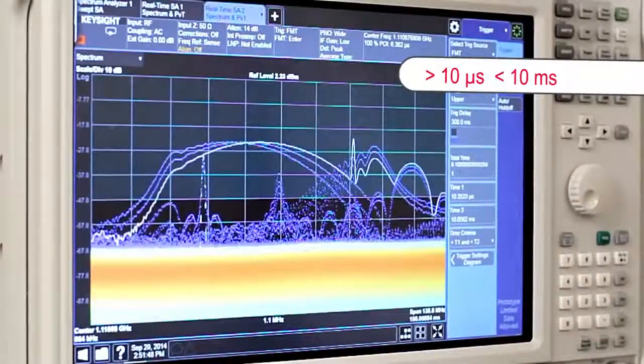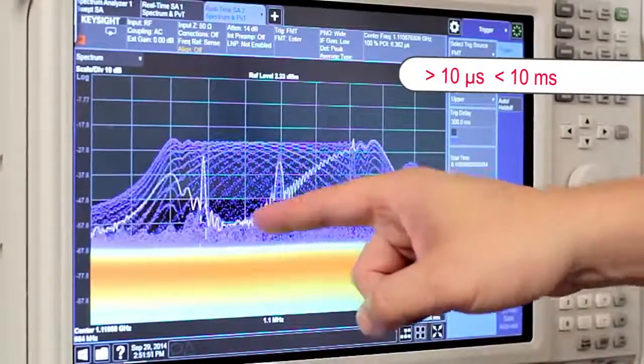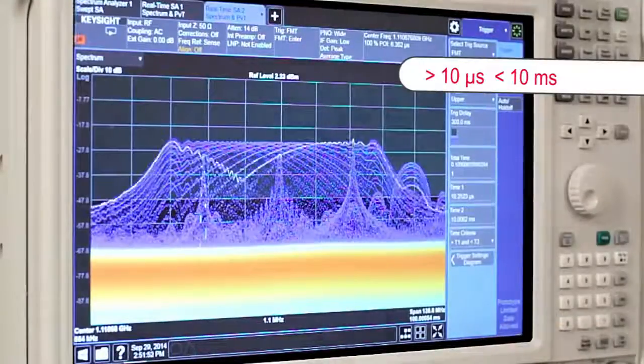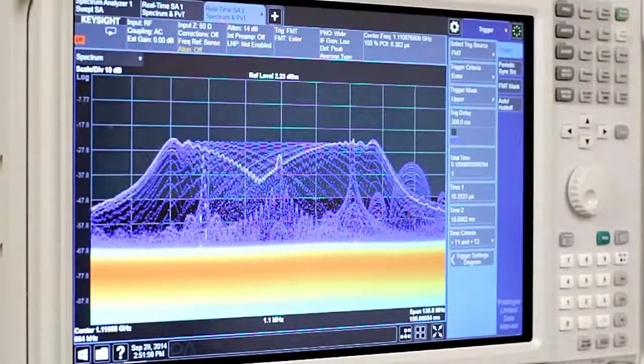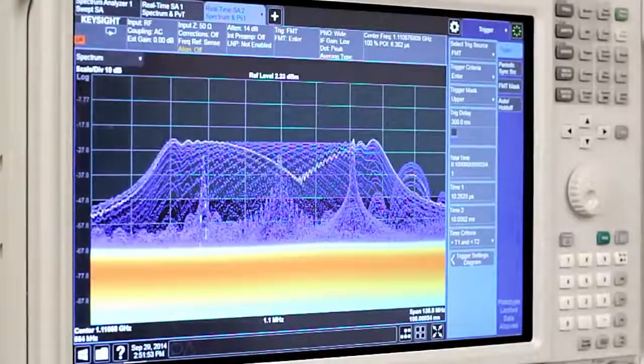If I switch to greater than 10 microseconds and less than 10 milliseconds, I can see that the signals are in this range. I could use this trigger to set up a recording or further qualify the signals to ascertain the approximate duration of each pulse.